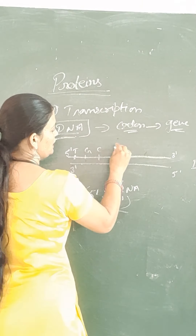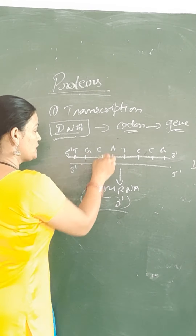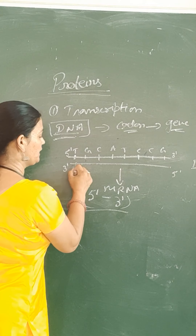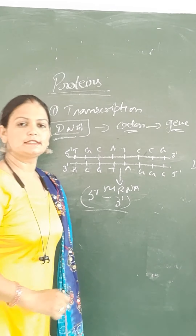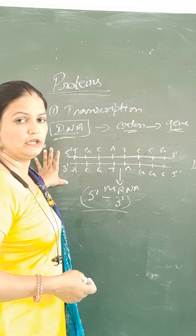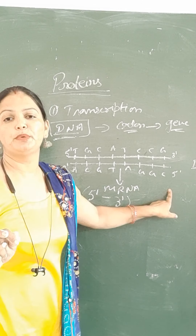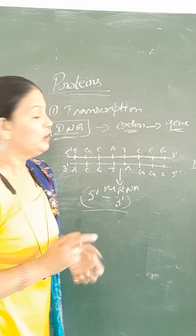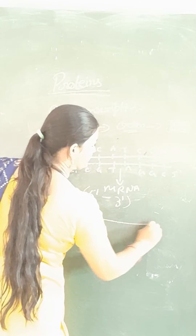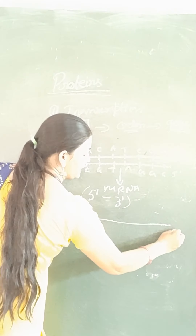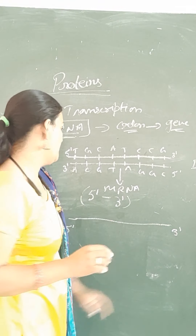Jaise yahan aap lete ho sequence: T G C A T C C G. Toh iska complementary strand: A C G T A G G C. Yeh iska complementary strand ho gaya. Toh first of all kya hoga aapka — dono jo DNA ke strands hain woh separate ho jaenge. Jo three prime to five prime end hoga woh as a template function bharega. Yeh jo strand hai yeh template ki tarah se kaam karega, aur iske complementary strand banega RNA ka, that is five prime to three prime direction mein.